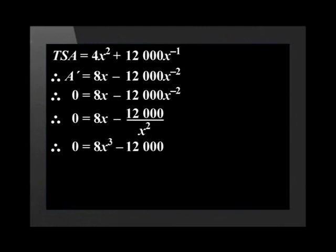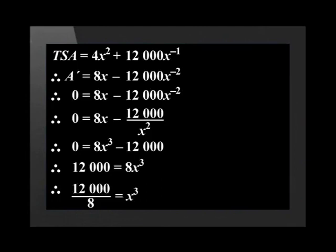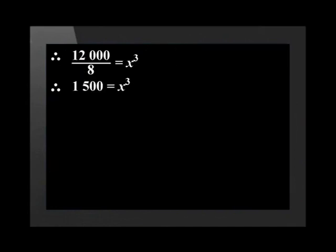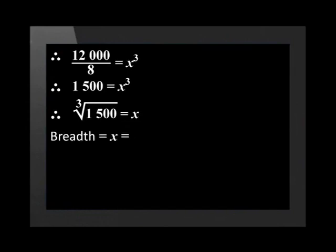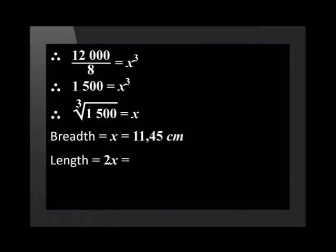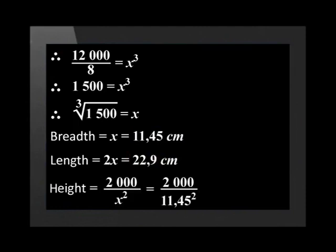We multiply both sides by x squared, which gives us 0 equals 8x to the power of 3 minus 12,000. We take 12,000 to the other side and divide both sides by 8, giving us 1,500 equals x to the power of 3. Taking the cubed root of 1,500, we find the breadth is equal to x, the length is equal to 2x, and the height is equal to 2,000 divided by x squared.